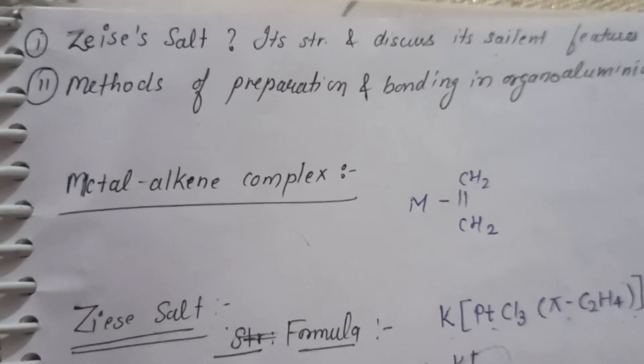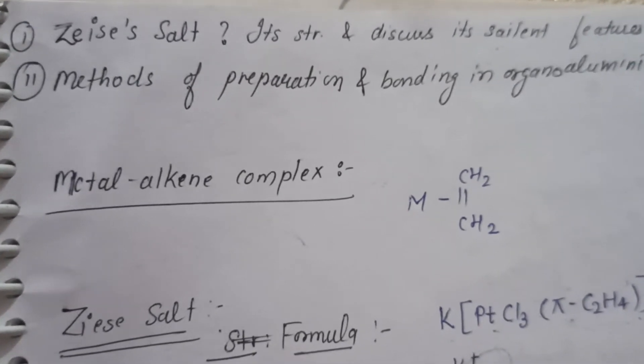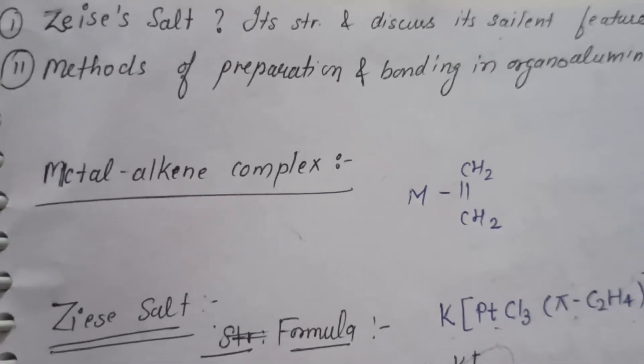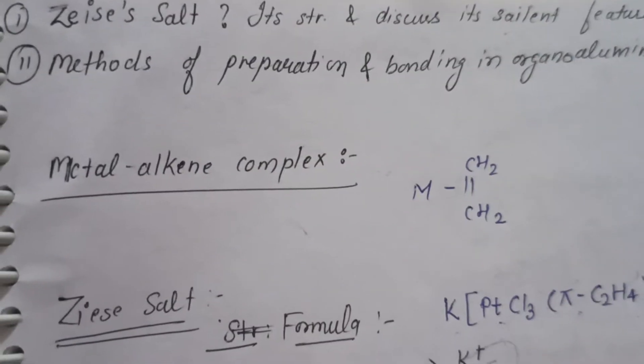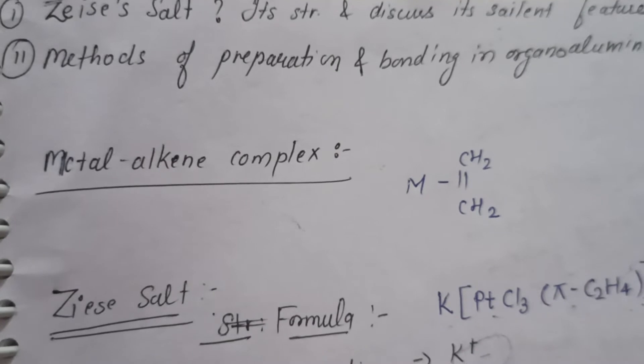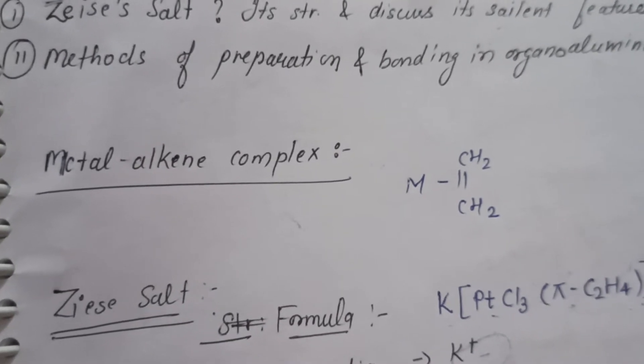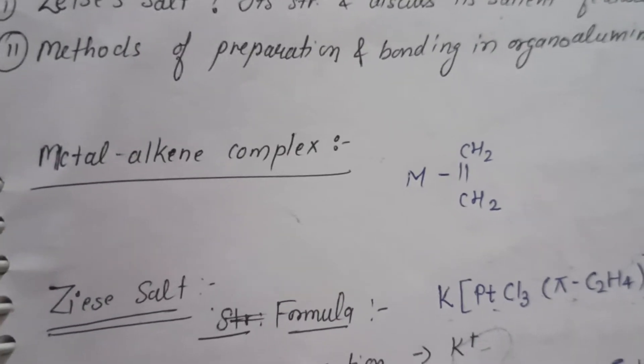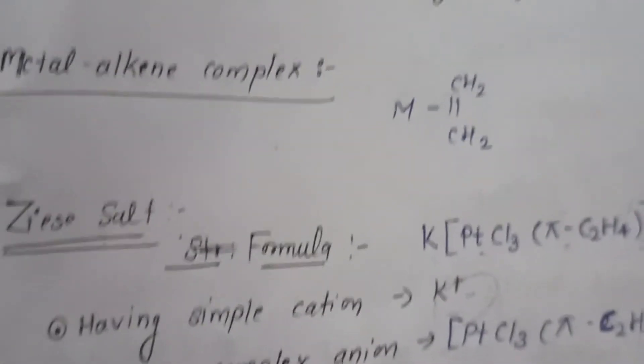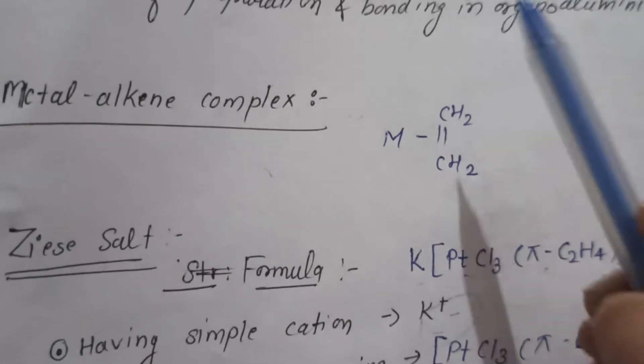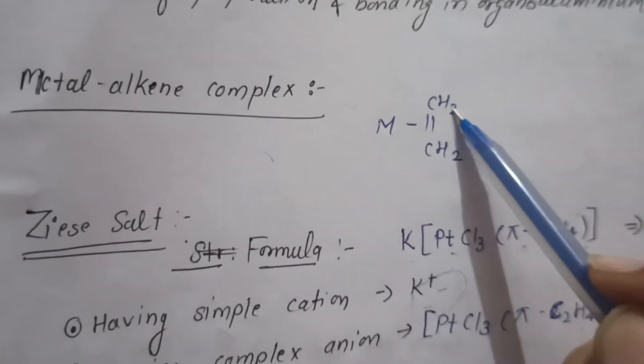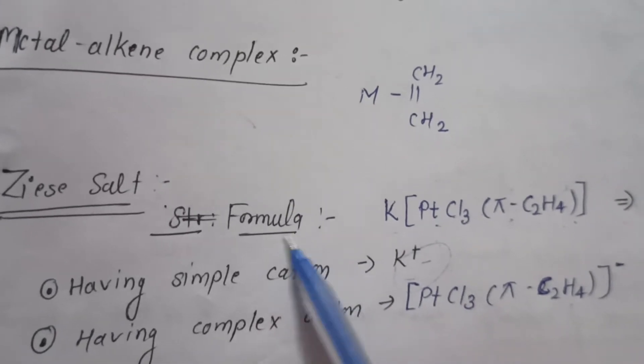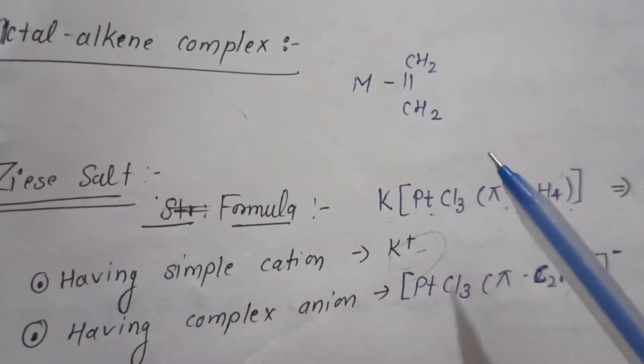First of all, let us know what is Z salt. So metal alkyne complex is made with metal alkyne. Now see Z salt, we take the example of the metal alkyne complex. This is clearly visible metal has been made with alkyne. So let us see this formula first of all. Z salt is K[PtCl3(π-C2H4)].